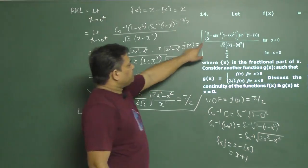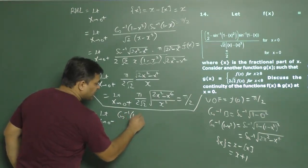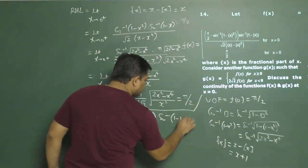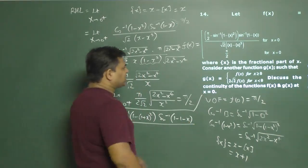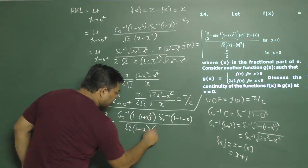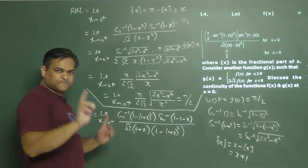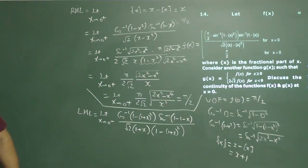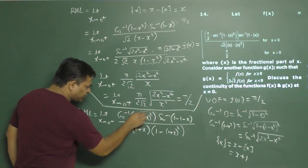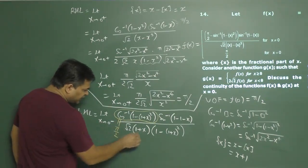For the left-hand limit, limit x approaches 0 minus, using π/2 − sin⁻¹ = cos⁻¹, the expression becomes cos⁻¹(1 − (1+x)²) in the numerator and sin⁻¹(1 − (1+x)) over root 2 times (1+x)². As x approaches 0, this gives cos⁻¹(0), and cos⁻¹(0) equals π/2.